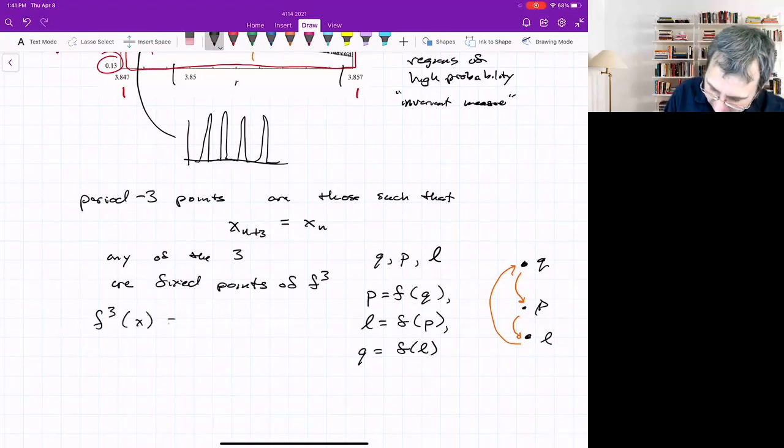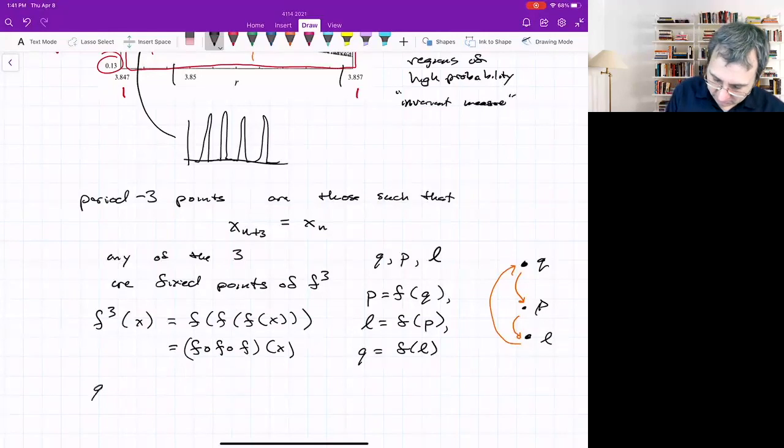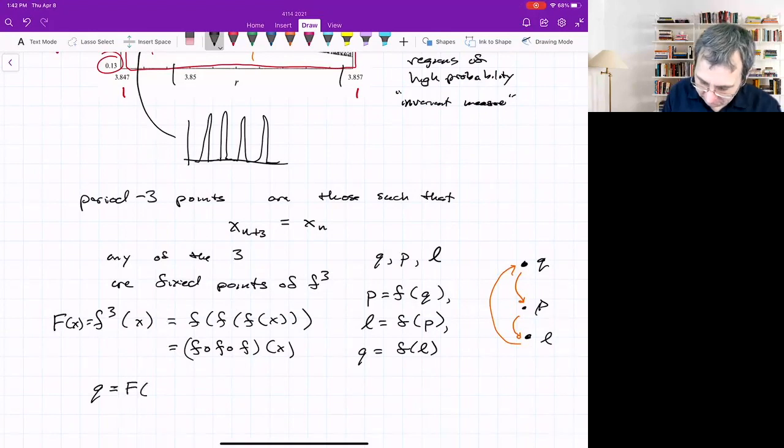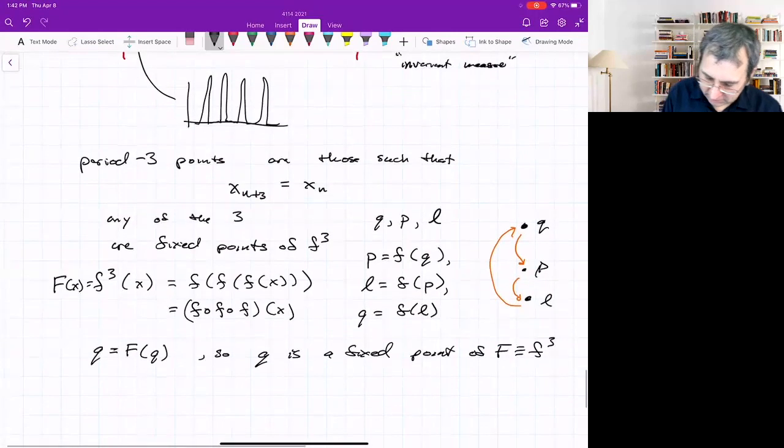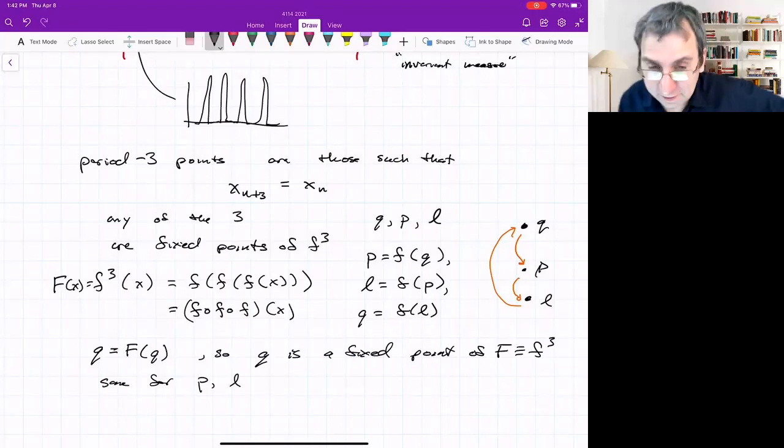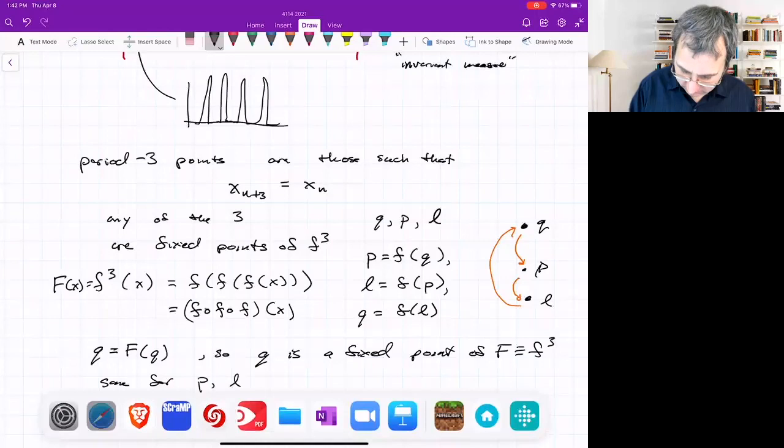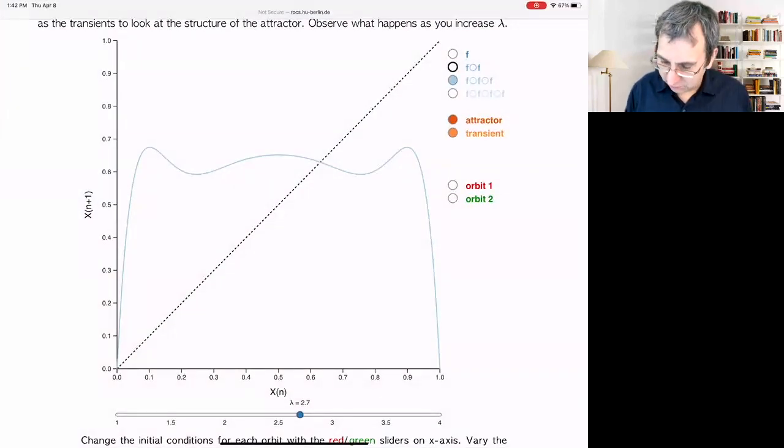So by three iterates of F, this means F of F of F. Sometimes people write this F composed with F composed with F. So all of these, Q is a, if we define this as a new map and it's just three iterates of F, Q is a fixed point of F, which is just F, little F, raised to the third power. And same for P and L. So that means we could, instead of looking at the map little F, we could look at the map of F composed with itself three times. And that's what I want to show you in this little simulation here.